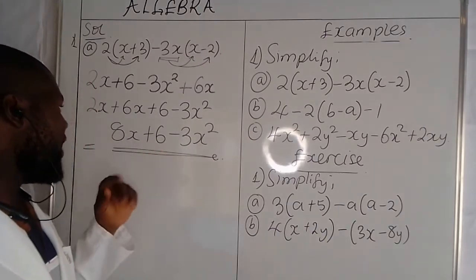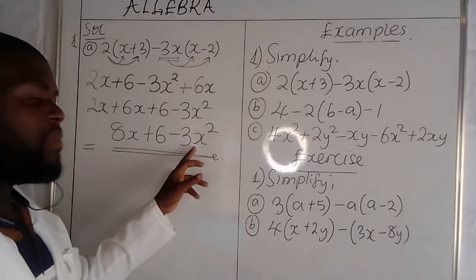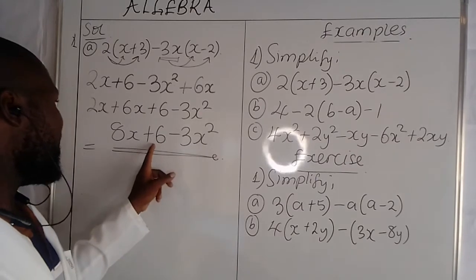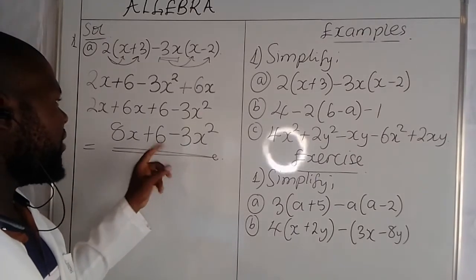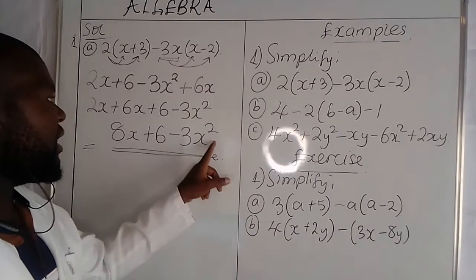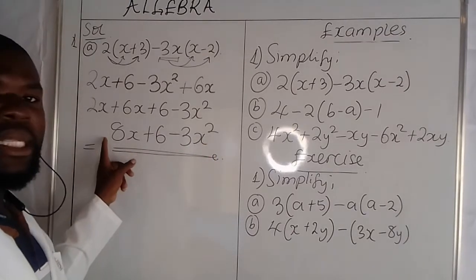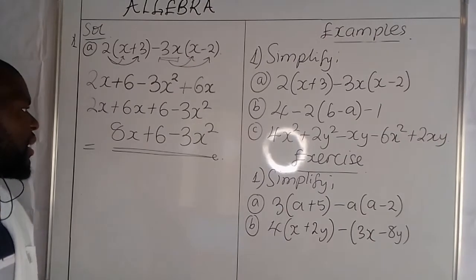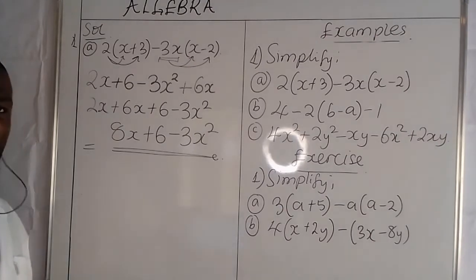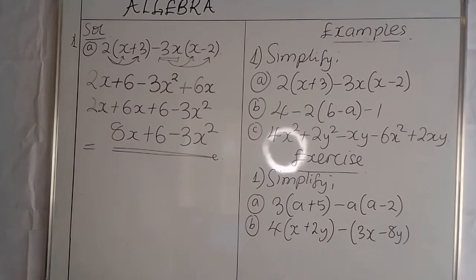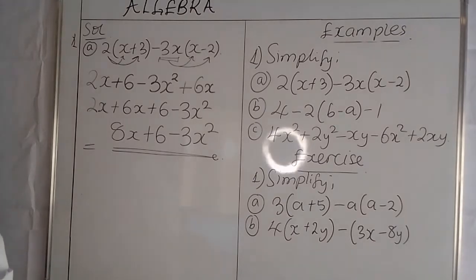Whether the terms are swapped does not matter. Whether the terms are commuted — for example, if we have positive 6 at the back or negative 3x at the front — that does not change anything; it is just the same expression. So basically, this is how we simplify algebraic expressions.